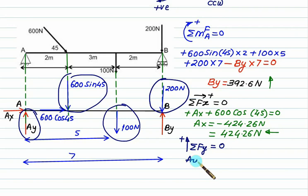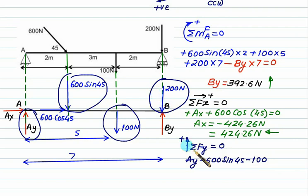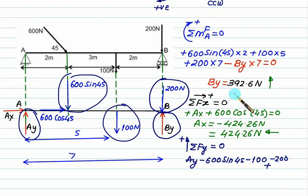Ay is acting upward so positive. 600 sin 45 is acting downward so negative. 100 N is also downward — negative. 200 N is also downward — negative. By is acting upward so positive, and we substitute By = 392.6 N.